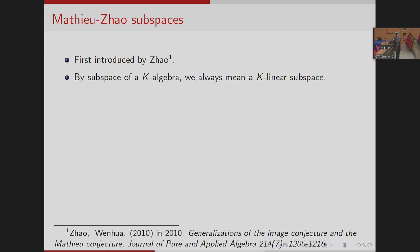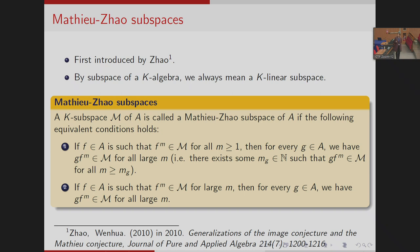Now I will talk about Mathieu-Zhao subspaces. These subspaces were recently introduced by Zhao in 2010. By a subspace of a k-algebra we always mean a k-linear subspace. A k-subspace M of A is called a Mathieu-Zhao subspace of A if: whenever f in A satisfies f^m in M for all m ≥ 1, then for every g in A, g·f^m is in M for all large m; equivalently, if f^m in M for large m, then g·f^m in M for all large m.